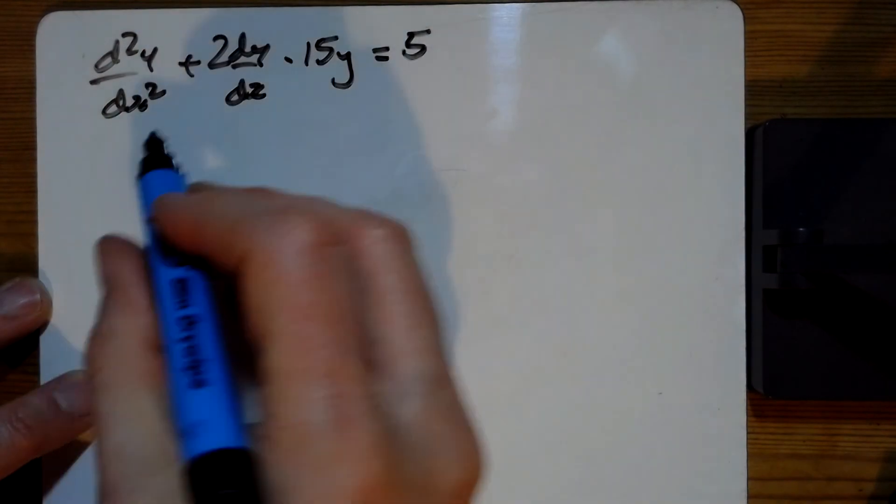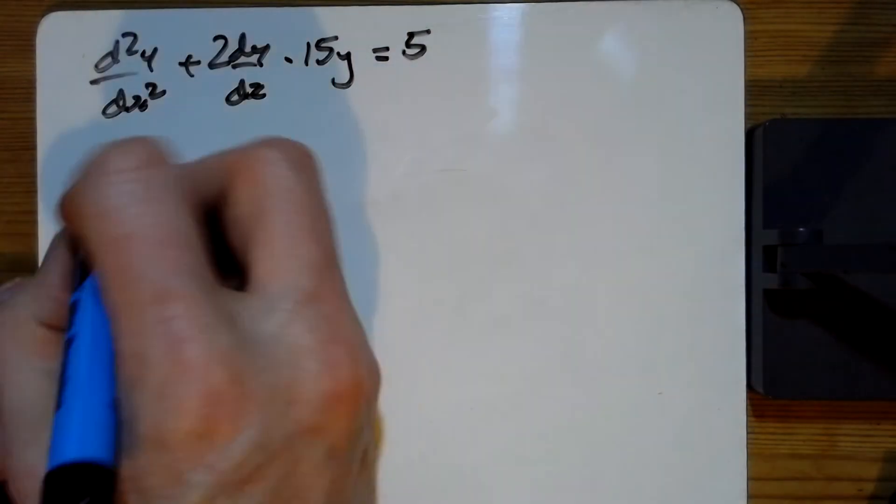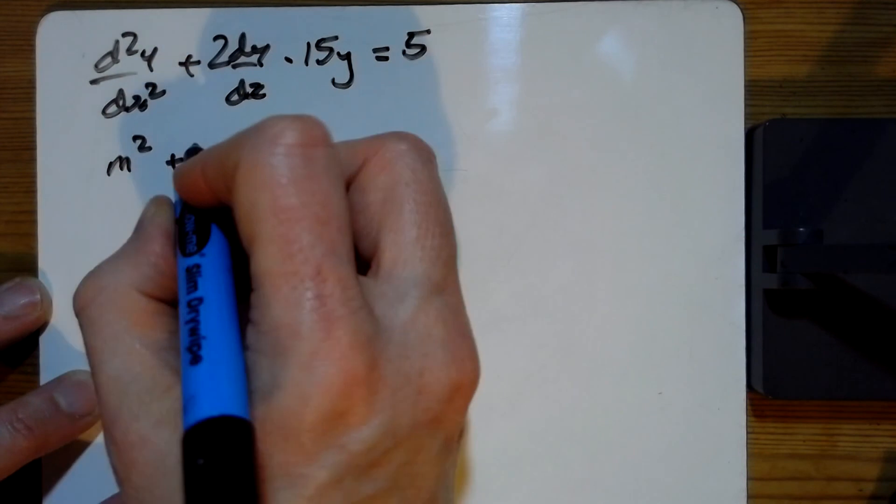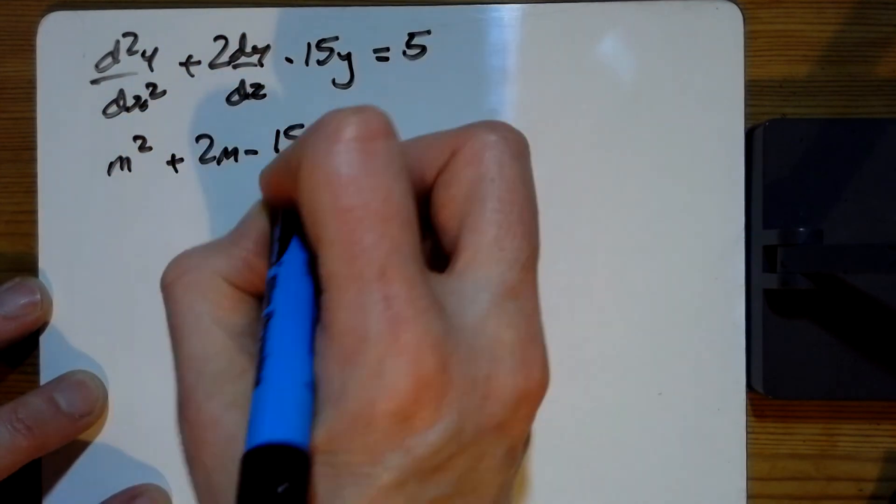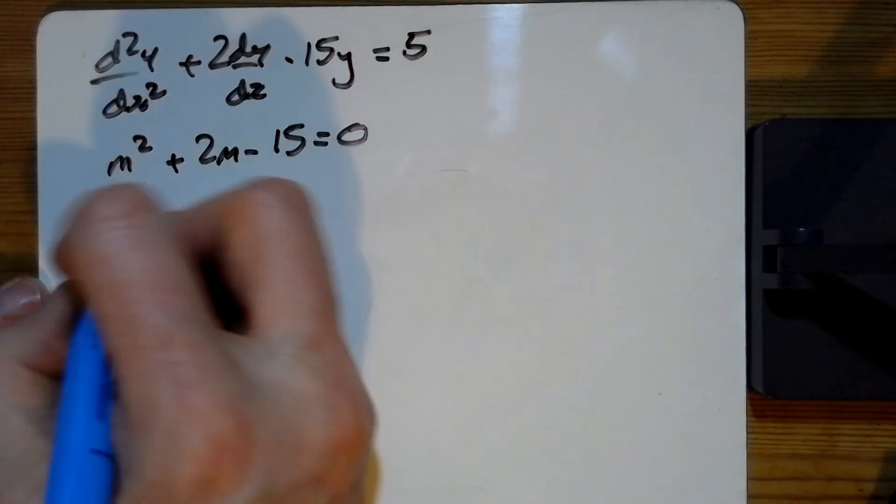For D, looking at the homogeneous part on the left-hand side when it equals 0 gives us the auxiliary equation.